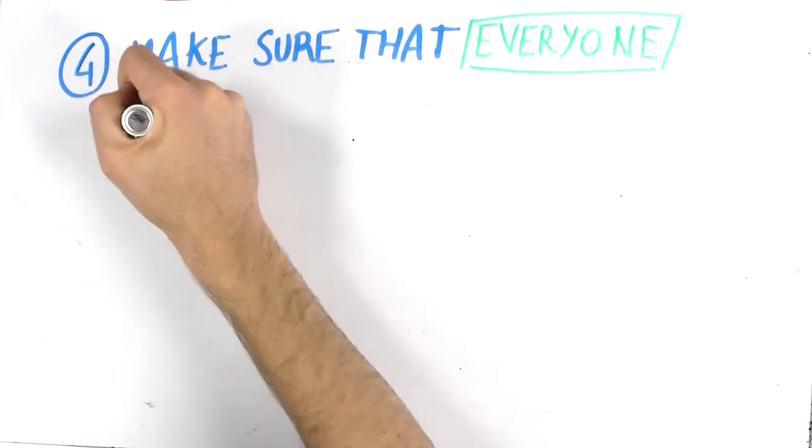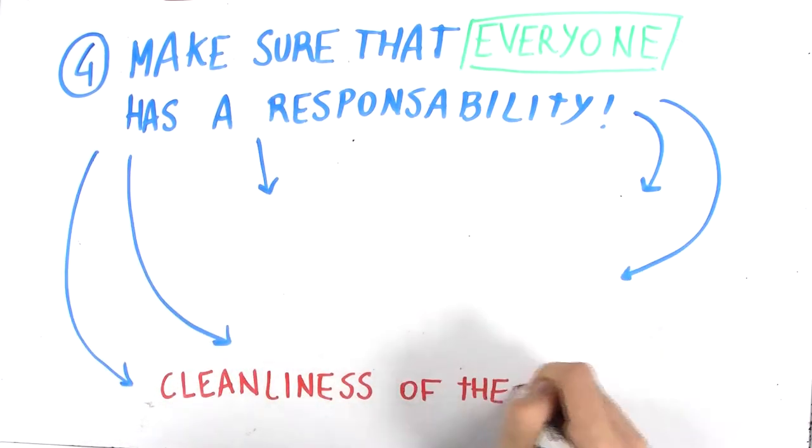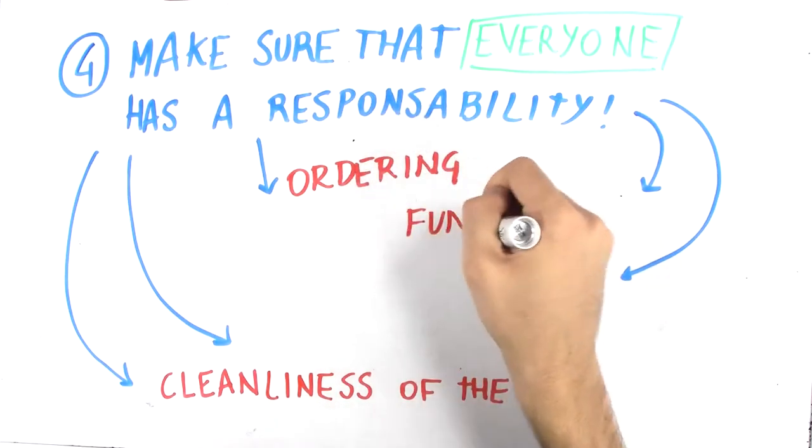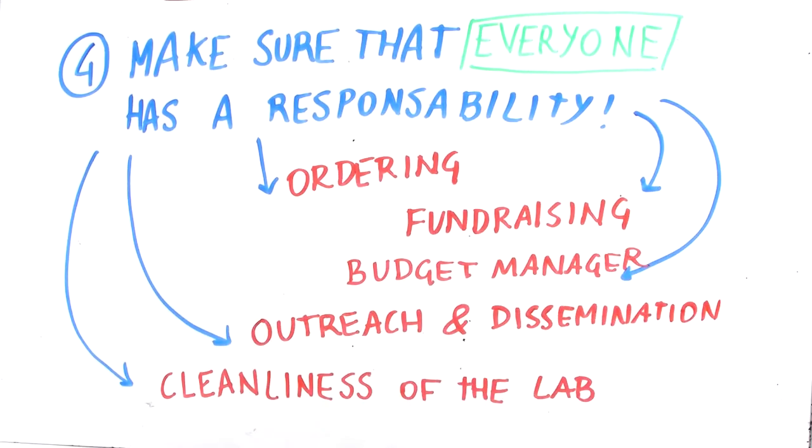Four, make sure that everyone has an assigned responsibility. For instance, in the lab, there should be one person who supervises cleanliness and another person to take care of the orders. You will also need someone to organize fundraising, a team budget manager, and a person in charge of the dissemination of the project.